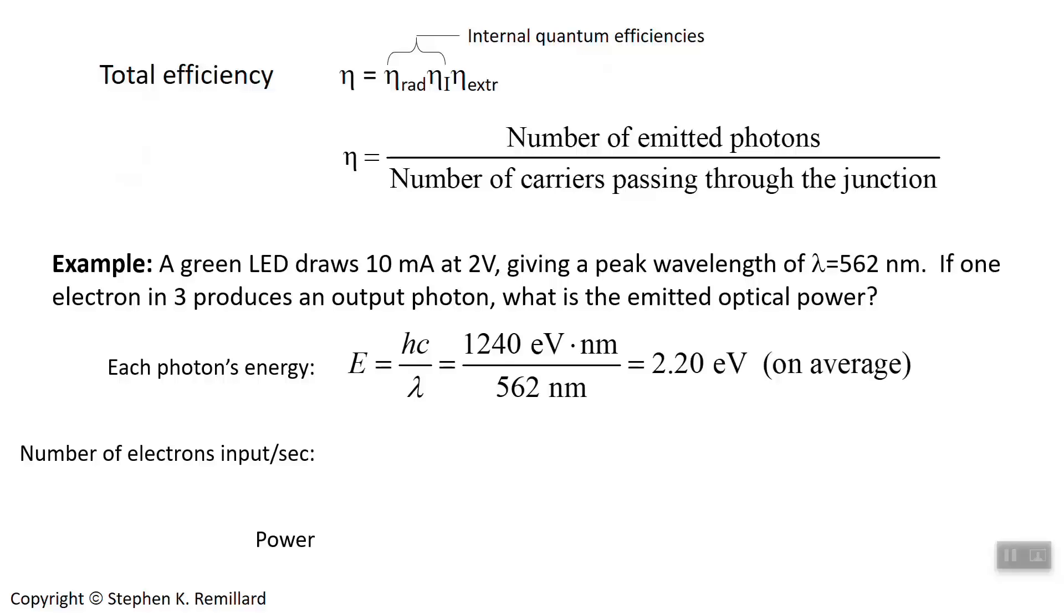On average means that there's a width to the distribution. Not all of the photons that come out have a wavelength of exactly 562 nanometers. They're distributed around that average. That's each photon's energy. How many electrons are going in each second? That's the next question. So you're given 10 milliamps. Can you convert that into electrons per second?